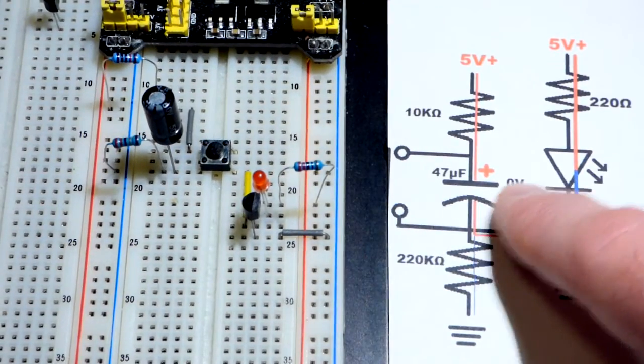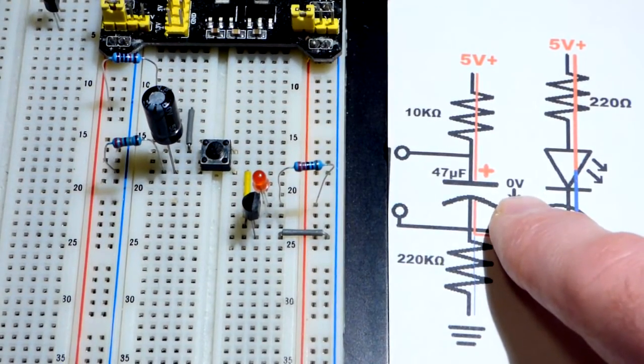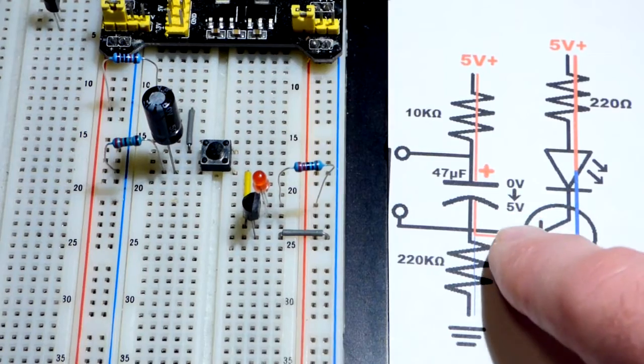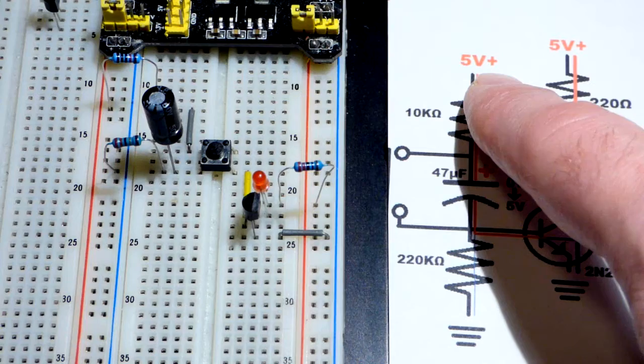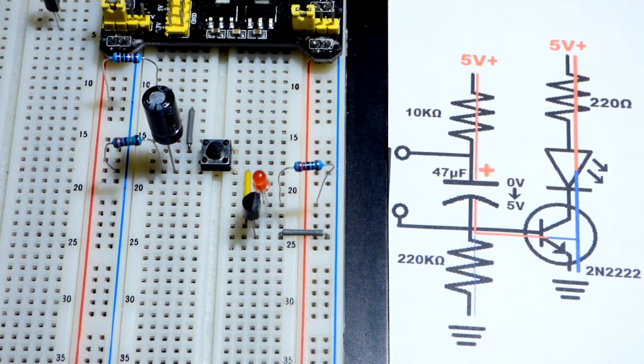But as the capacitor charges, it will be going from 0 volts across it up to 1 volt, 2 volts, 3 volts, 4 volts, whatever. And at each volt that it gains, that's less difference from the power supply voltage.